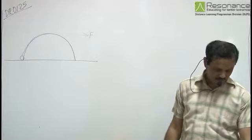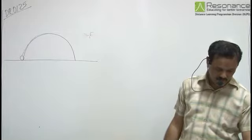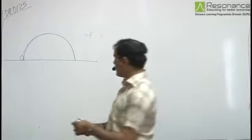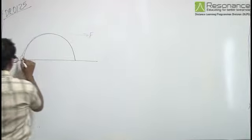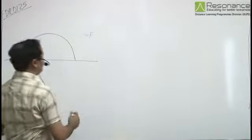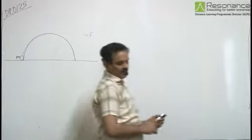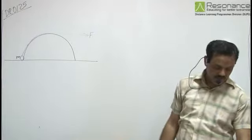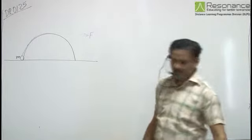Here in this particular problem, as shown in the figure, a person is pulling a block of mass M. This mass M is being pulled by a person by applying a force F from ground on a fixed rough hemispherical surface up to the top of the hemisphere.